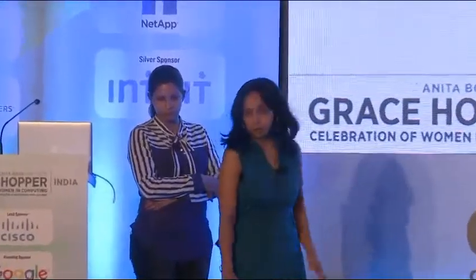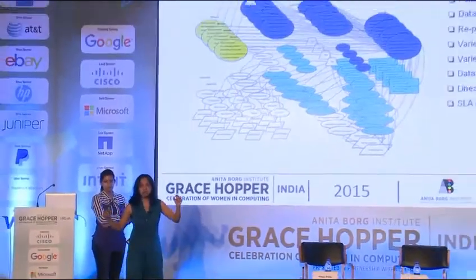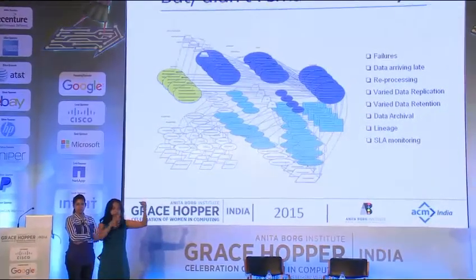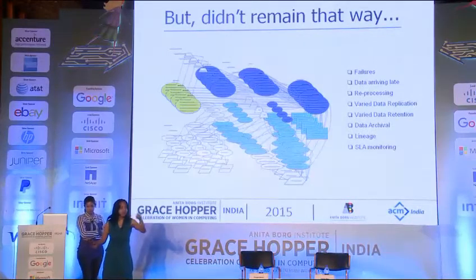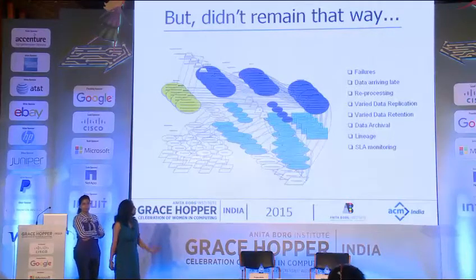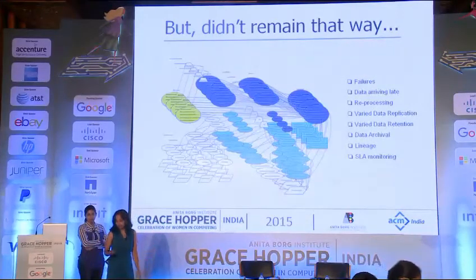Apart from that, we had a bunch of requirements. Failure handling: of course you need to handle failures — infrastructure failures, application failures, all sorts. We also had data that arrived late, maybe because the log server collection was late. Then we needed reprocessing. Why is reprocessing called out here? Because there is a data dependency throughout — reprocessing means you need to make sure the downstream chain waits and the whole dependency is followed. It's not just one independent serial process. We also had data replication requirements, retention requirements, archival, lineage to find out where the data came from, and monitoring.